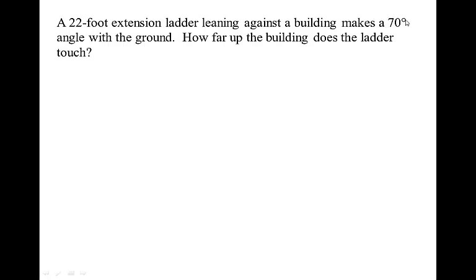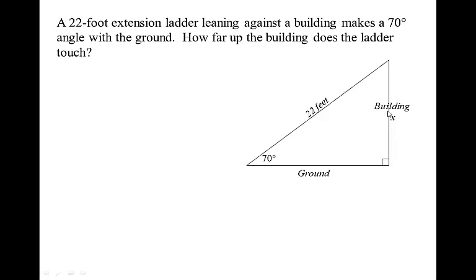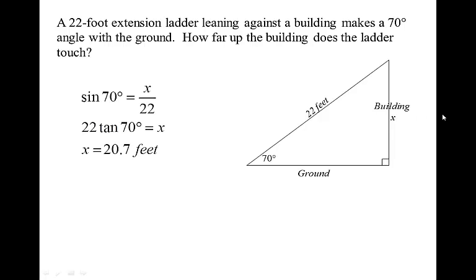We love extension ladder problems in this course. A 22-foot extension ladder leaning against the side of a building makes a 70-degree angle with the ground. Be careful on ladder problems — we'll either give you the angle the ladder makes with the ground or the angle it makes with the building; just make sure you know which one is which. How far up the building does the ladder touch? Here's your building going up, x this time. The 22-foot ladder is the hypotenuse, so we use sine: sine 70 equals x over 22, multiply both sides by 22, and we get 20.7 feet. Keep your calculators in degree mode for this entire lesson.